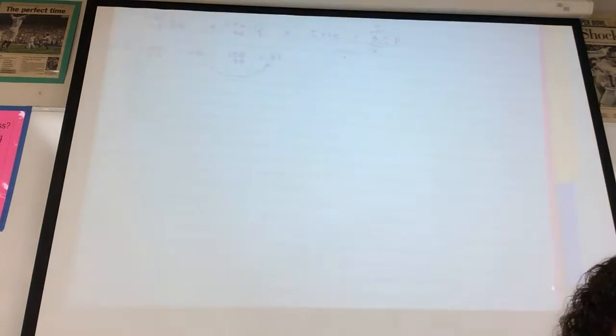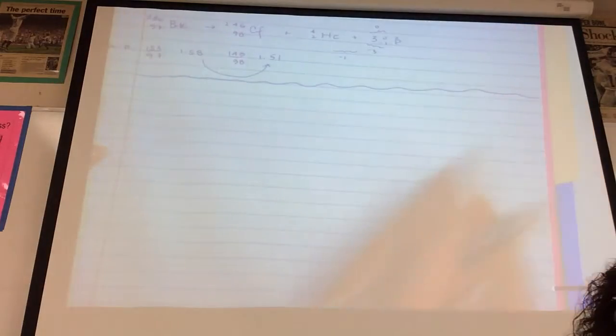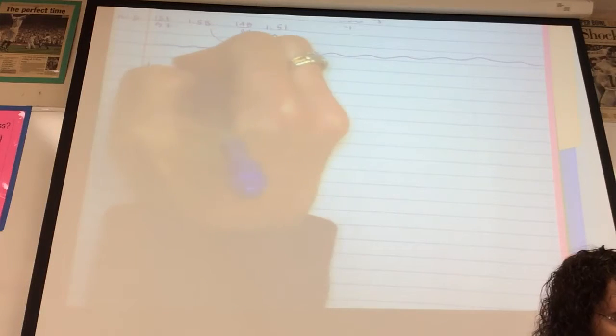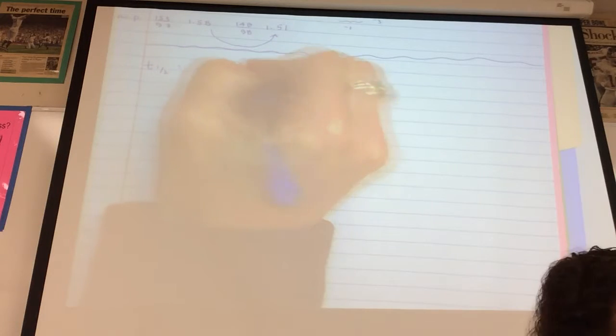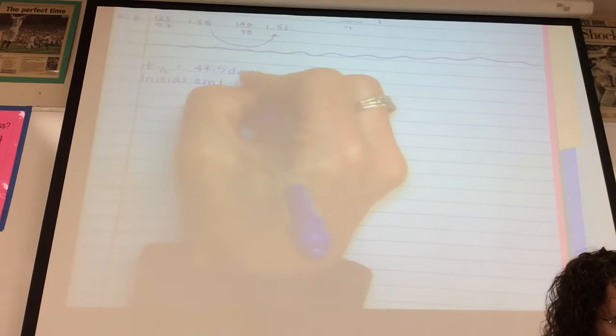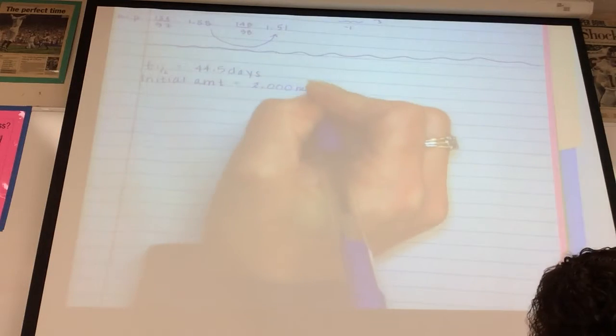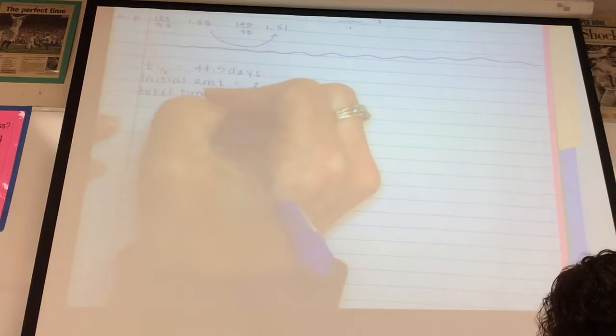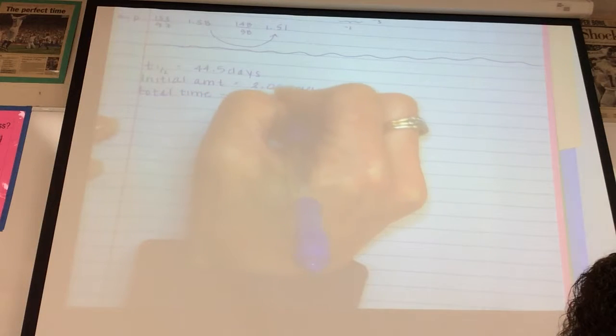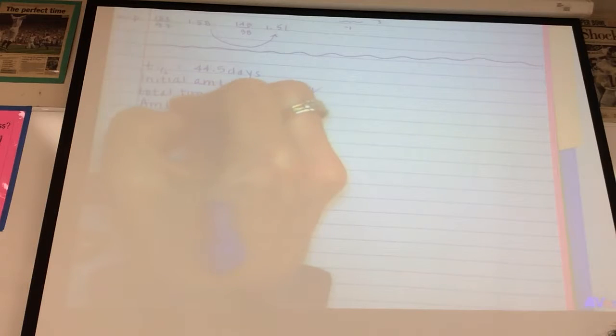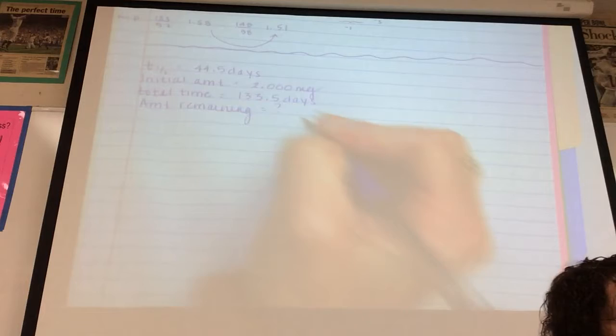The half-life of iron 59 is 44.5 days. How much of a 2.000 milligram sample will remain after 133.5 days? There are a couple of ways to approach this we can walk through. I like to get the information down just like we do with all problem solving. It says that the half-life T1 half is 44.5 days. The initial amount is what you start with and that's equal to 2.000 milligrams. And the total time is 133.5 days. And we want to know how much remains, so the amount remaining. And again, if you pull the information out, you're far more likely to be successful here.